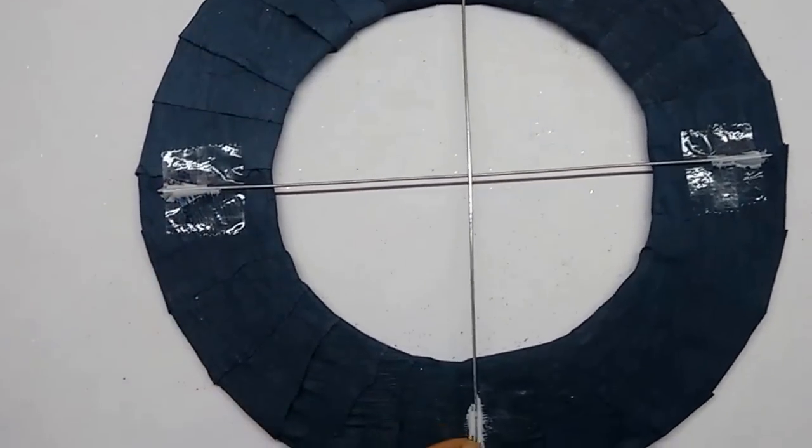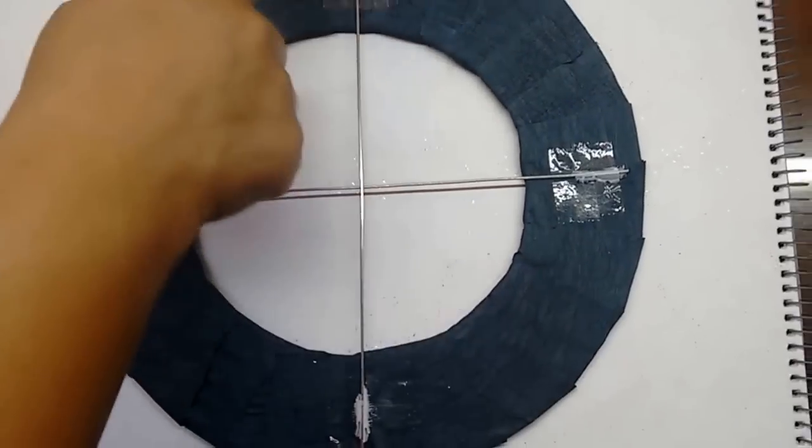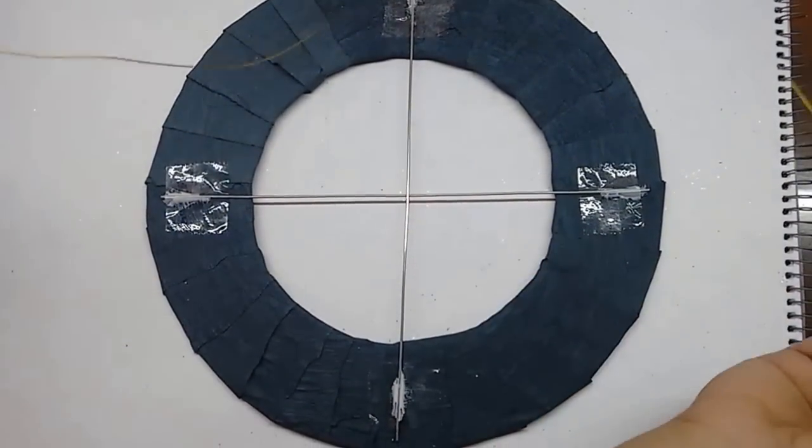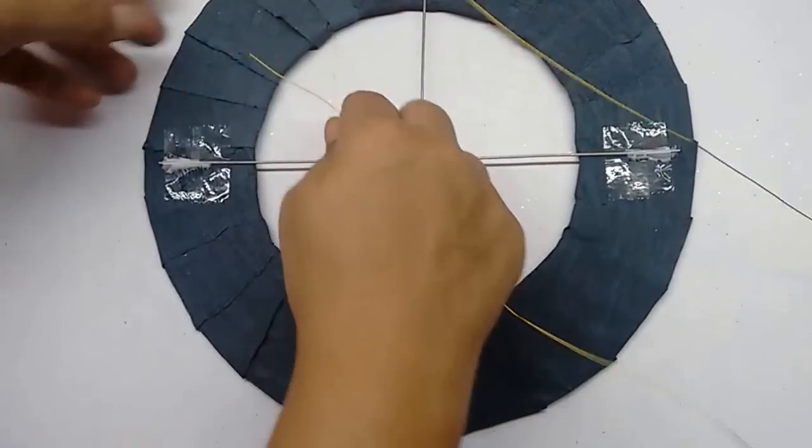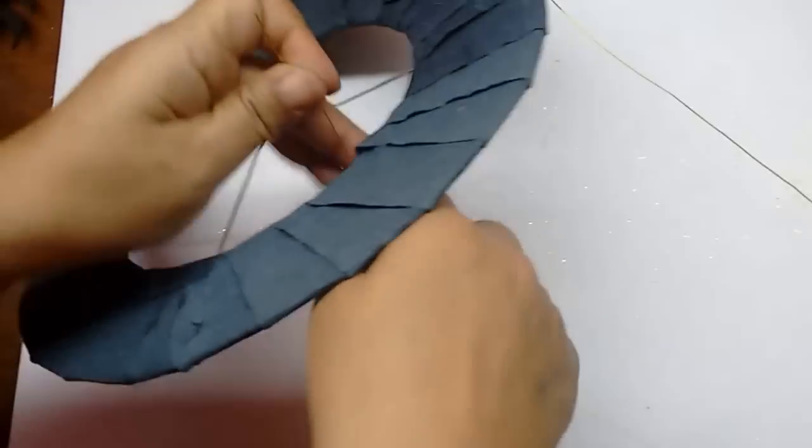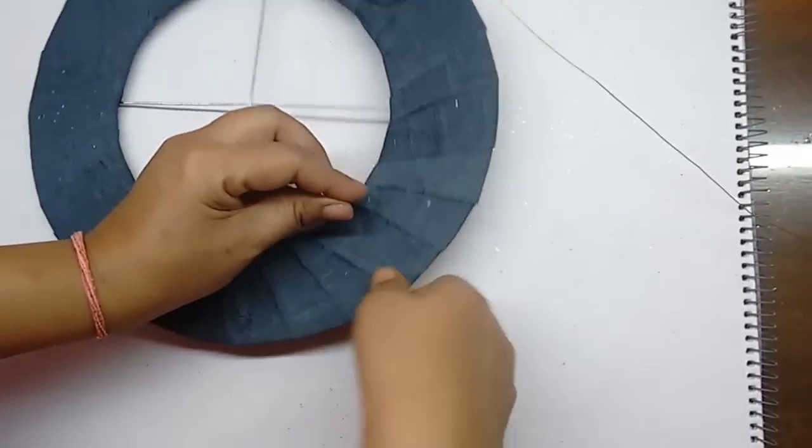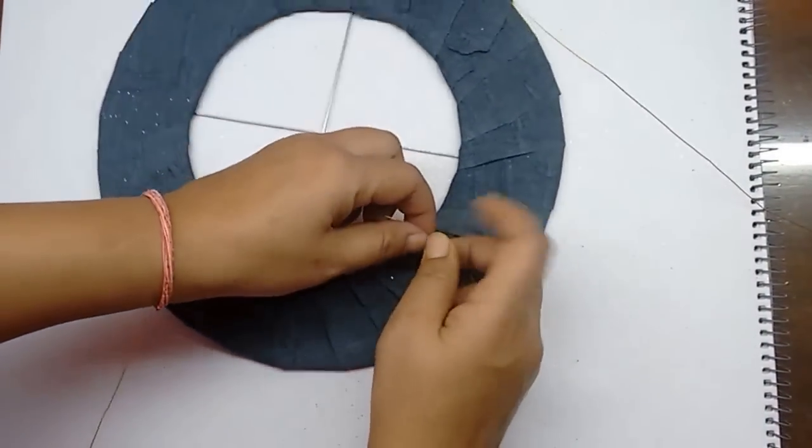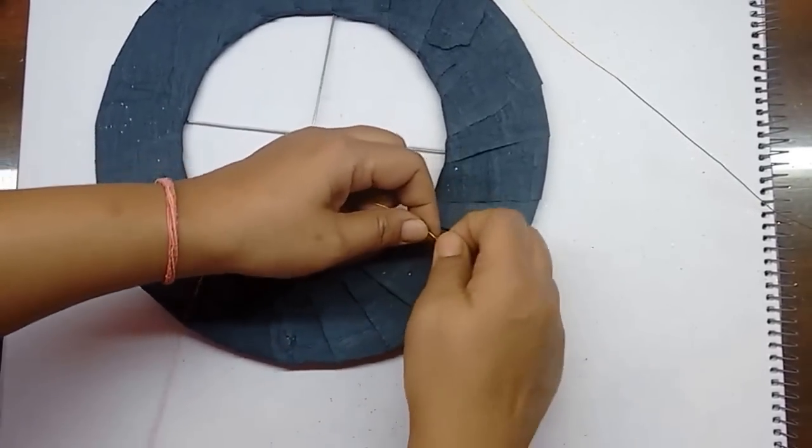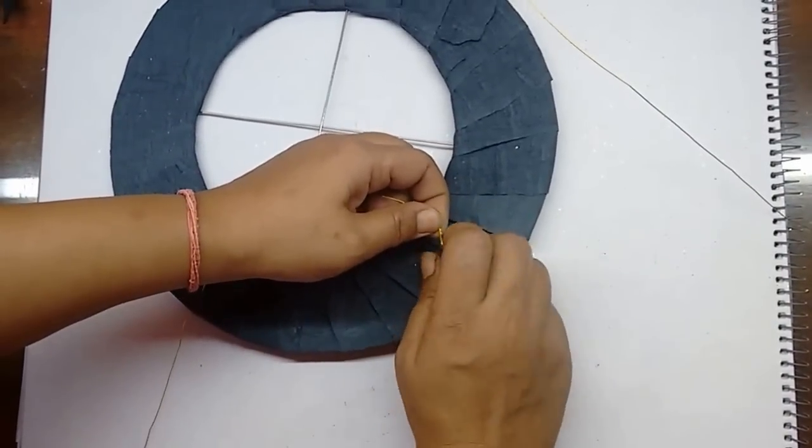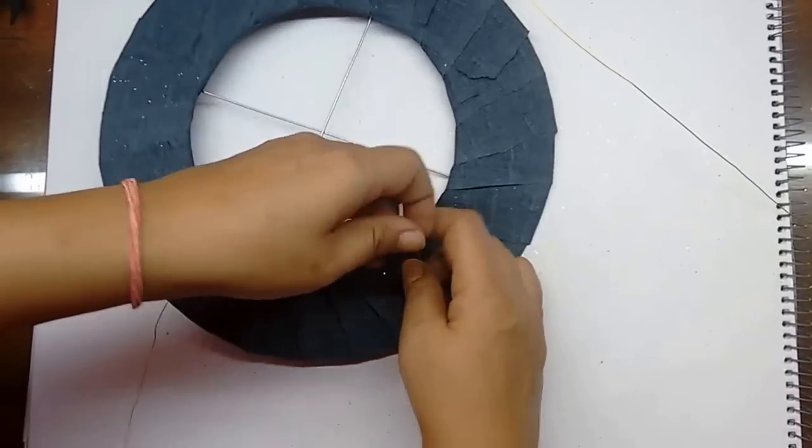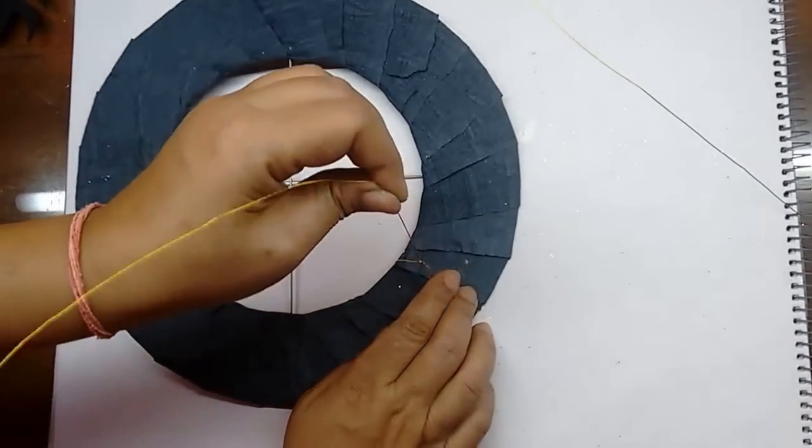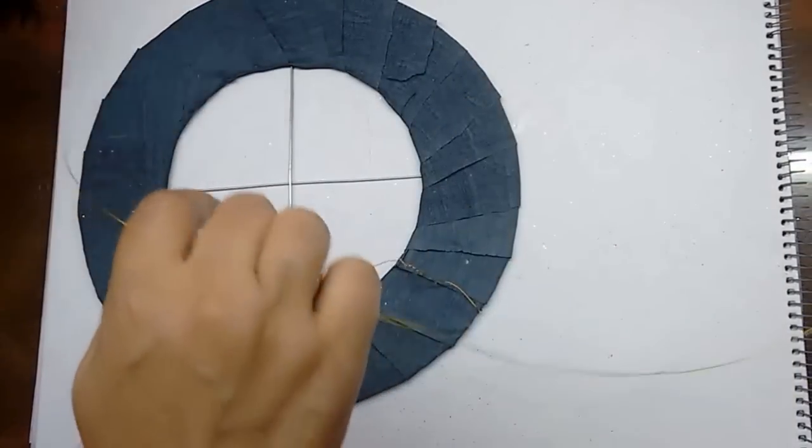I have secured it properly with scotch tape on all the four sides. Now take two thin wires. First take one and tie the base like this. Twist the wire on the other side so it becomes nice and secure. Like this, and do the same thing on the opposite side.